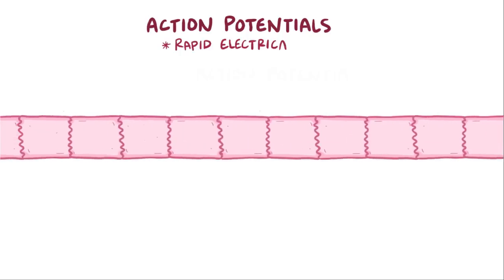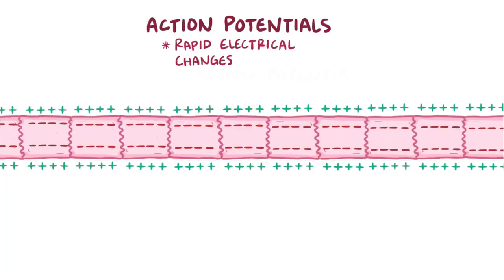Action potentials are the really fast electrical changes that happen across the membrane of certain cells and often propagate from one cell to an adjacent cell, and cells in the heart communicate this way.